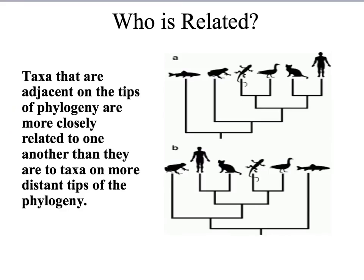Taxa that are adjacent on the tips of the phylogeny are more closely related than those that are distant. For example, we see here that the lizard and the duck are more closely related than the lizard and the shark. A lot of people will think that they are all closely related. However, this is not the case.